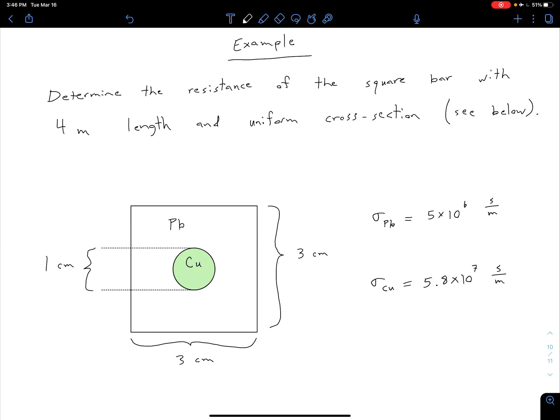We started with this 3 by 3 square of lead, so that's our Pb, and we've bored a hole in it of 1 centimeter diameter, and we've filled that hole with copper, Cu. Now what we're trying to do is figure out the resistance of this composite material that makes up this 4 meter length bar.